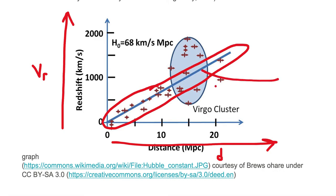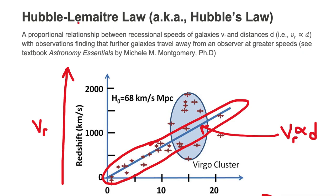This linear line is a proportionality where v sub r, or the recessional speeds, is proportional to distance d. And that is what's known as the Hubble-Lemaître Law, otherwise known as Hubble's Law.